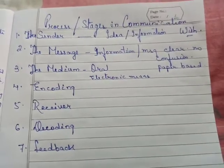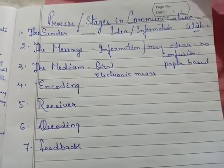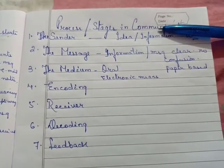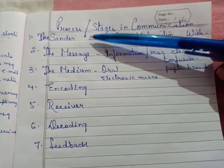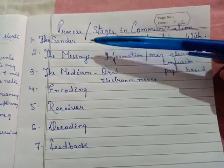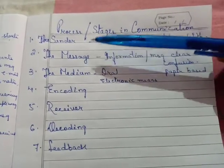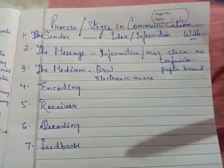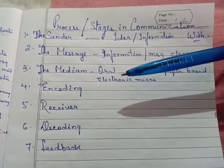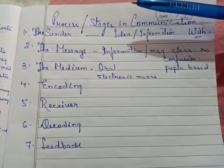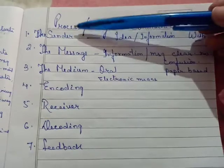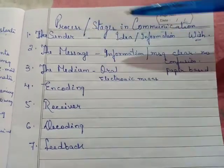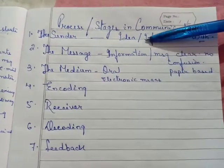In this video I will be teaching you the process or stages involved in communication. The first step towards stages in communication is the sender. A sender is the person, group, or organization who has an idea or information which they want to communicate to others. The process of communication starts with the sender, and the idea or information in the sender's mind is the source of communication.